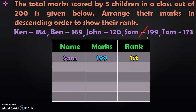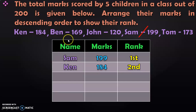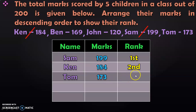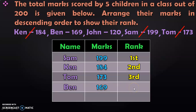Now strike out Sam from the comparison. We compare the remaining 4 numbers — 184, 169, 120, and 173 — looking at the tens place: 8, 6, 2, and 7. Of these, 184 is the next largest number, so Ken, who scored 184, stands in the 2nd position. Next, among 169, 120, and 173, the number 173 is smaller than 184 but bigger than the other two. So Tom, who scored 173, ranks in the 3rd position.